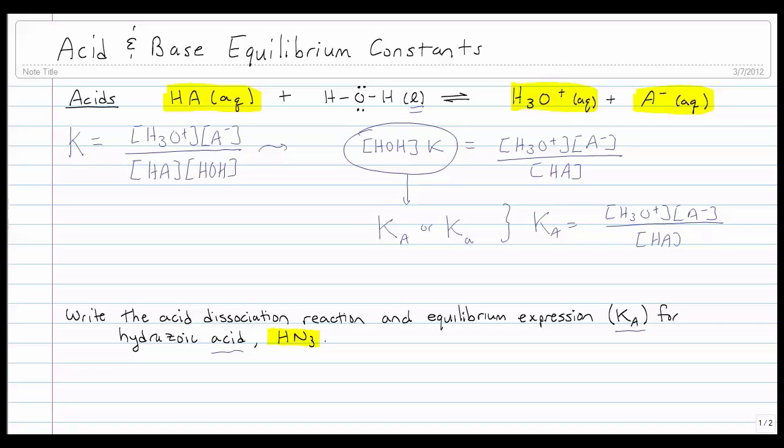So it says write the equilibrium, write the acid dissociation reaction and the equilibrium expression. So the acid dissociation reaction is HN3 aqueous plus water. This is to have that bonded there, which is liquid in equilibrium with.